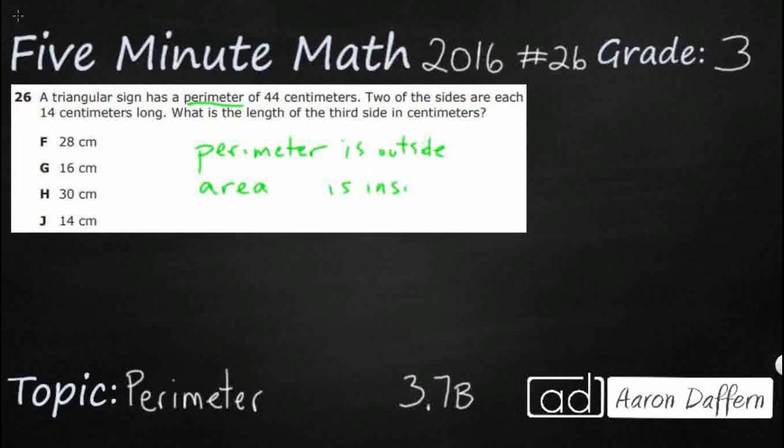Area of a triangle is something you'll learn in fifth grade, but you know how to find the area of a rectangle in third grade. So we're looking for the outside here. The perimeter is already 44. Two sides are each 14 centimeters long. What is the length of the third side?